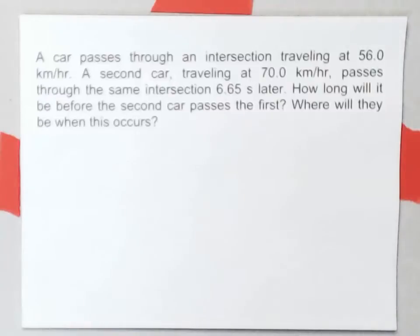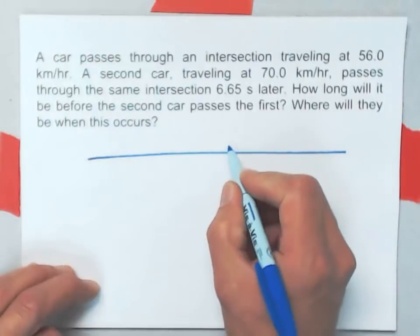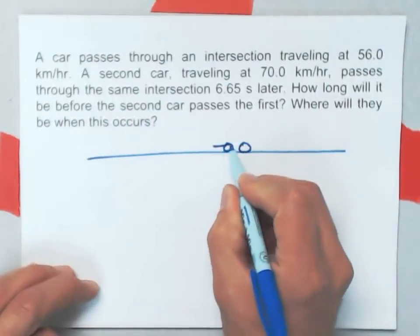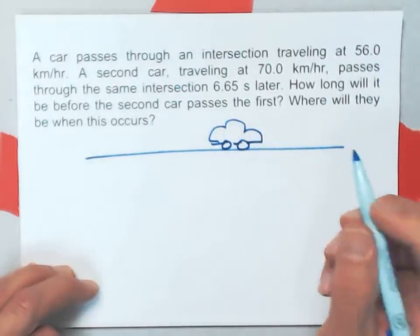Both of these cars are traveling at constant velocity. The sketch I'm going to make, well we could first make a very crude sketch. Here's the first car, fancy huh?